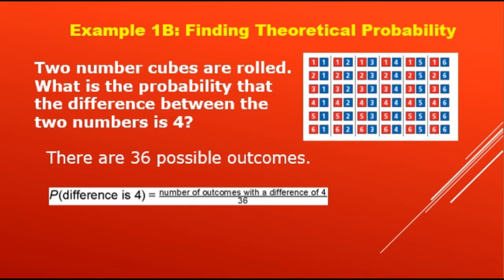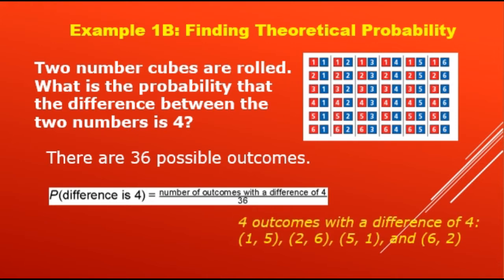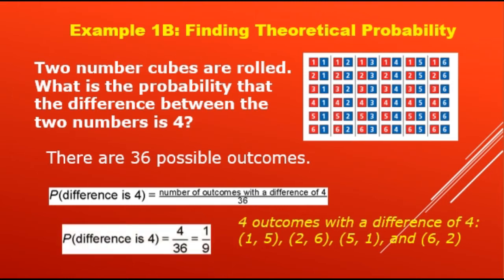Let's find the number of outcomes with a difference of 4. First, 1 and 5: 5 minus 1 is 4. Next, 2 and 6: 6 minus 2 is also 4. Next, 5 and 1: 5 minus 1 is 4. Next, 6 and 2: 6 minus 2 is also 4. Therefore, we have 4 outcomes with a difference of 4. So P(difference is 4) = 4 over 36, or 1 over 9.